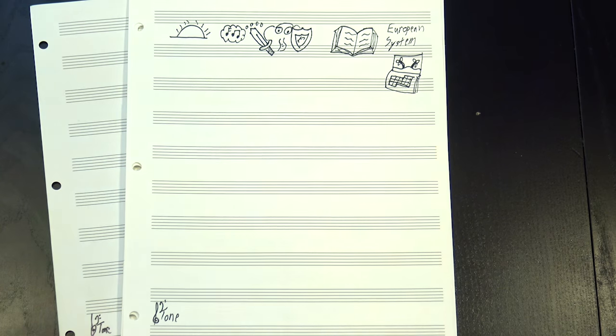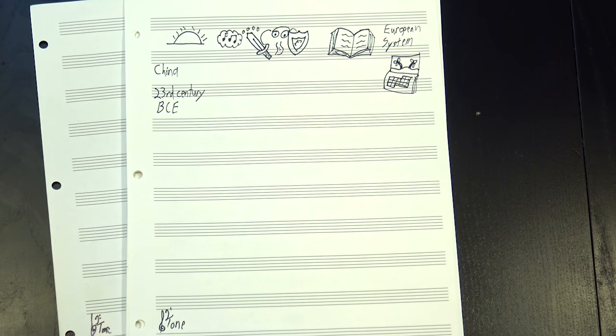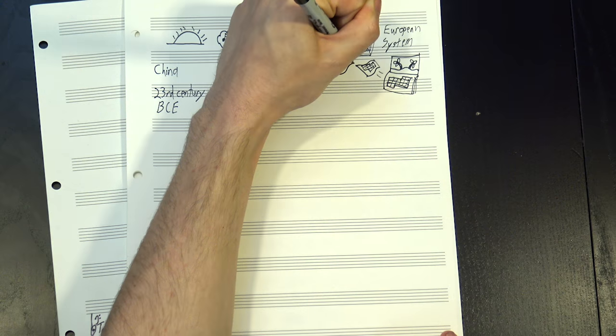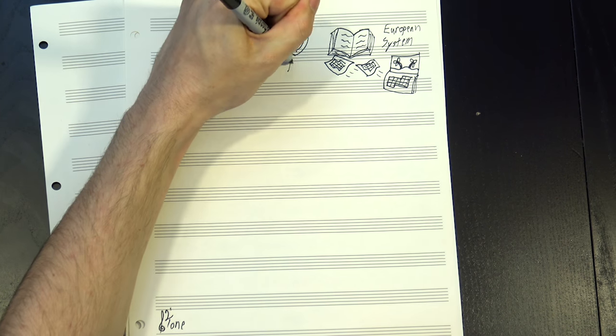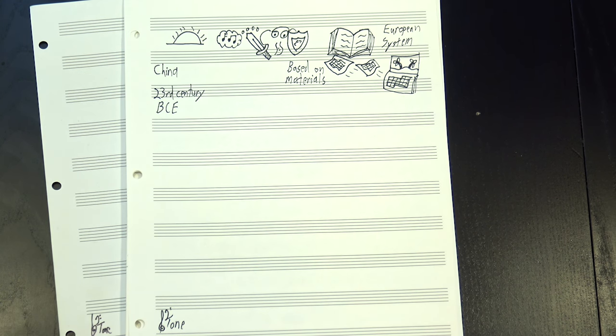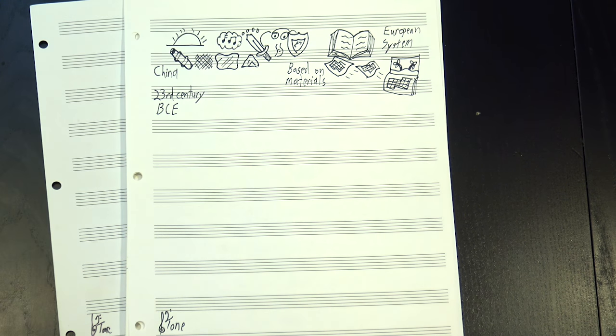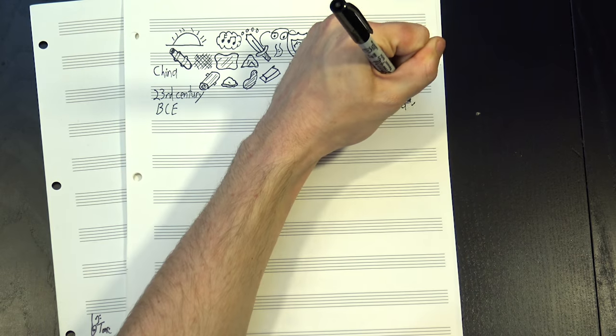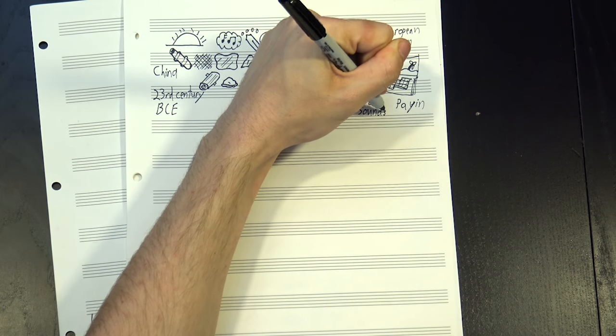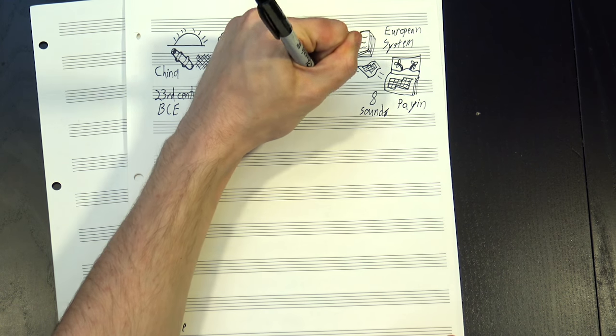The oldest known system comes from China, and it dates back to around the 23rd century BCE. That's over 4000 years ago, and their approach was based on what materials the instrument was made of. To start, they had four types: stone, skin, silk, and bamboo. Gradually, they began to add more, until they reached a system called pa yin, literally translated as eight sound, which, as you might guess, had eight materials.